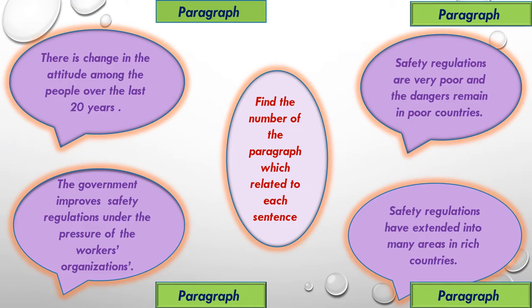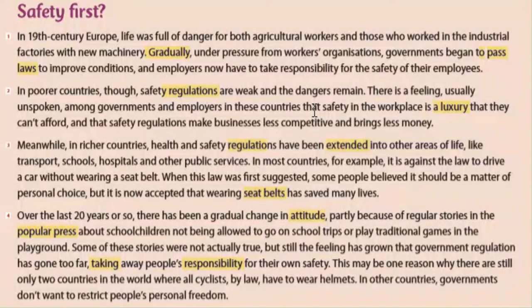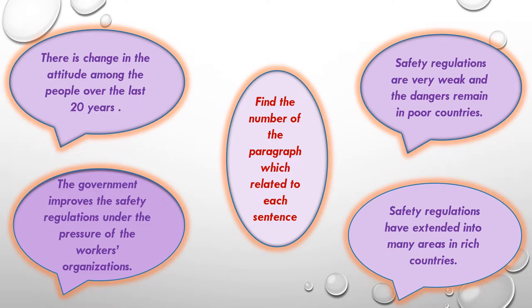We have 4 sentences. Please read them carefully and stop the video to read the whole text quickly to find the number of the paragraph related to each sentence. This is the whole text — please read it quickly to find the answers. Now let's read the sentences to find the matching paragraph numbers. Number 1: There is a change in the attitude among the people over the last 20 years. This is paragraph 4.